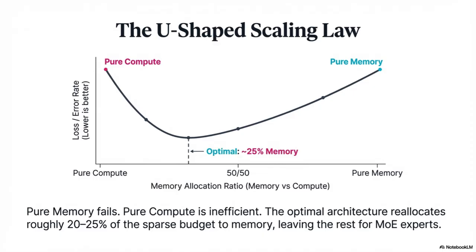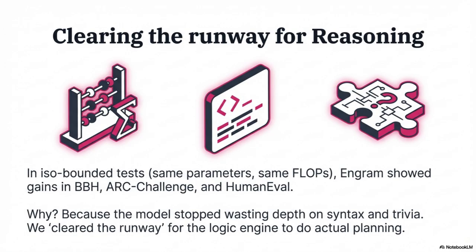That structural benefit extends in a big way to long context — the next big frontier. By offloading local tracking like names or phrases in a huge document with cheap lookups, the main attention mechanism can spend its expensive budget on global context — linking ideas across 32,000 tokens.